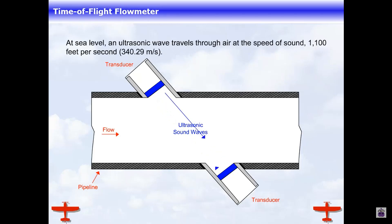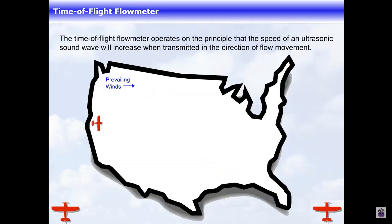At sea level, an ultrasonic wave travels through air at the speed of sound, 1,100 feet per second or 340.29 meters per second. The time-of-flight flow meter operates on the principle that the speed of an ultrasonic sound wave will increase when transmitted in the direction of flow movement.